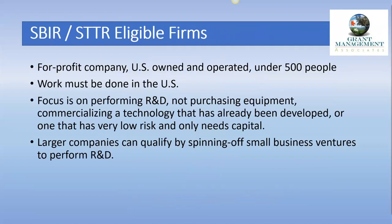Eligible firms must be a for-profit company, U.S. owned and operated, and have under 500 employees. All of the work for the project must be done in the United States — even if your company has components outside the country, as long as the proposed work is done in the U.S. Performing R&D should be the focus, not purchasing equipment or commercializing something already developed. Things that have low risk and only need capital are not of interest to SBIR. Larger companies do qualify for SBIR by spinning off smaller ventures.